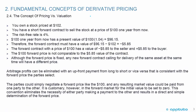Let's go through an example to clarify the concept of pricing versus valuation. Say you own a stock priced at $102. You have a short forward contract to sell the stock at a price of $100 one year from now. The risk-free rate is 4%. So $100 one year from now has a present value of $100 divided by 1.04 — present value equals future value divided by 1 plus the interest rate — giving a present value of $96.15.